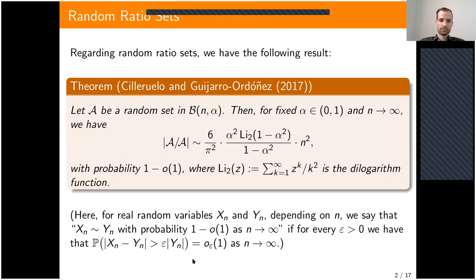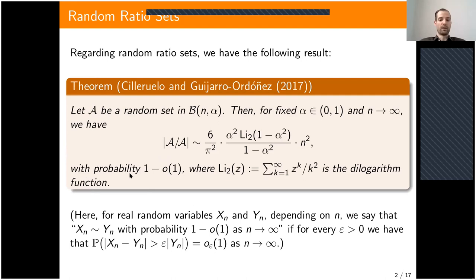Regarding random ratio sets, Celeriero, Guianno, and Ordonius gave this result: let A be a random set in the model B(n, α). If we keep α fixed and let n go to infinity, we have an asymptotic formula for the cardinality of the random ratio set, which holds almost surely — meaning the probability that the two quantities are close in ratio goes to one. In this formula we can see the dilogarithm function.